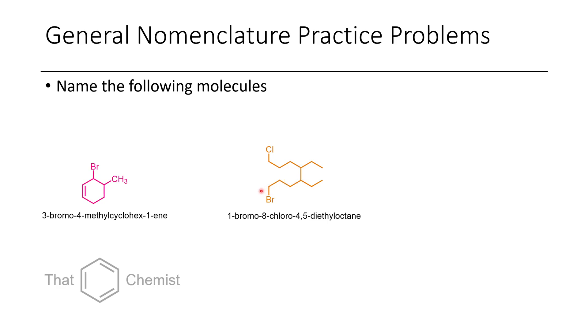Now we have to choose whether we're going to pick the bromine or the chlorine as our priority. Because bromine is a larger element, it's given the priority. It's also alphabetical, so this is why it's listed first. We have 1-bromo, 8-chloro. Here we have 1-2-3-4, this is the 4 position, 5, this is the 5 position. 4,5-diethyl octane.